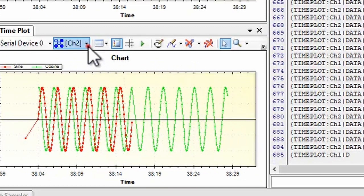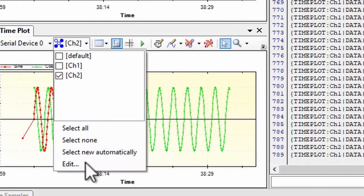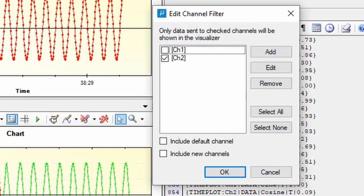By the way, the default channel is used when a name isn't supplied when the visualizer variable is created in your Arduino sketch. And you can edit the list to pre-populate channels, or remove old ones.